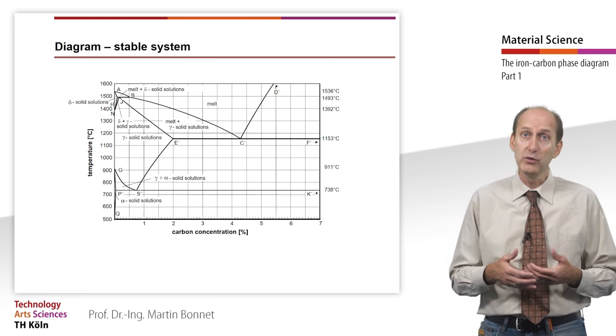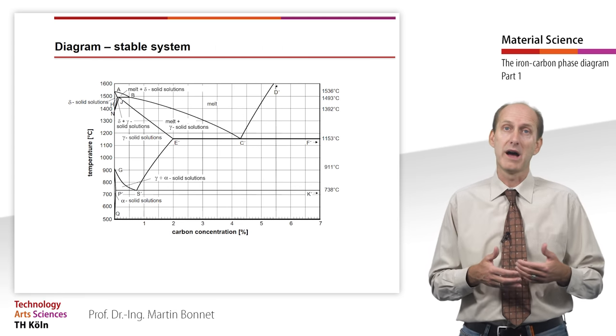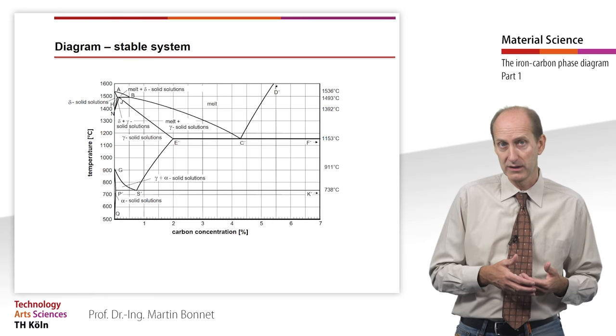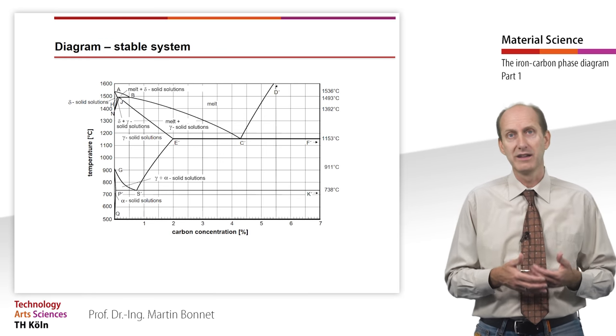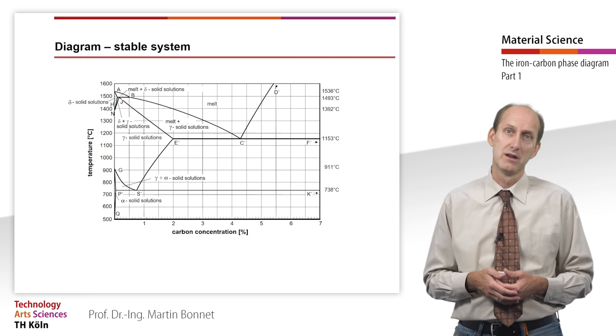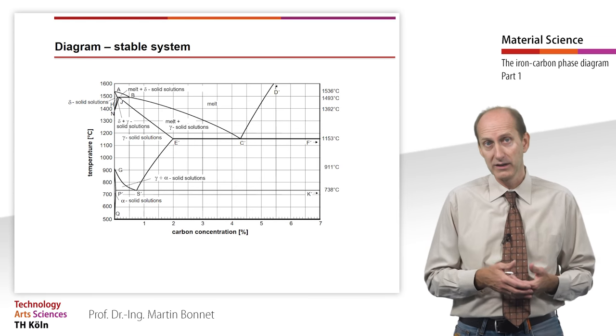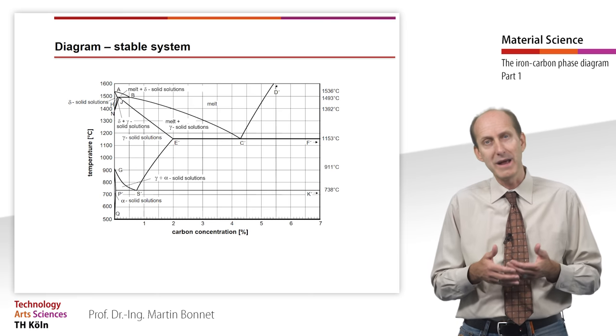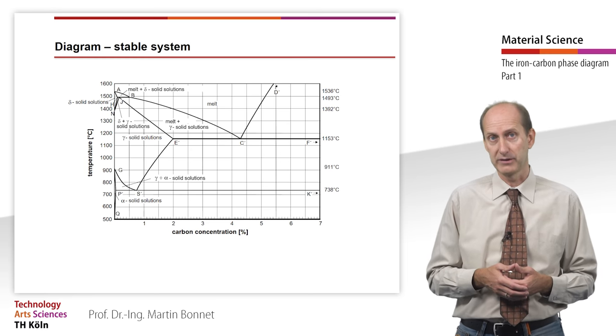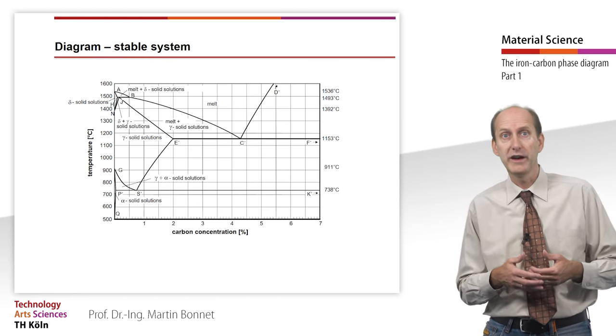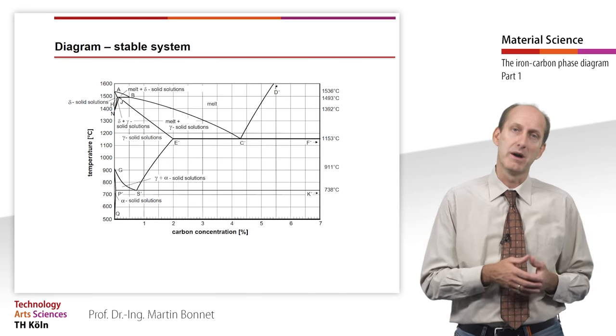Thus, in the two-phase area between delta and gamma iron, delta and gamma iron must be present. Just as in the two-phase area between gamma iron and alpha iron, gamma and alpha iron must be present. Above the liquidus line there is of course melt. This means that in the two-phase area between melt and delta iron there must be both melt and delta iron present. And the two-phase area between melt and gamma iron must also contain both melt and gamma iron.